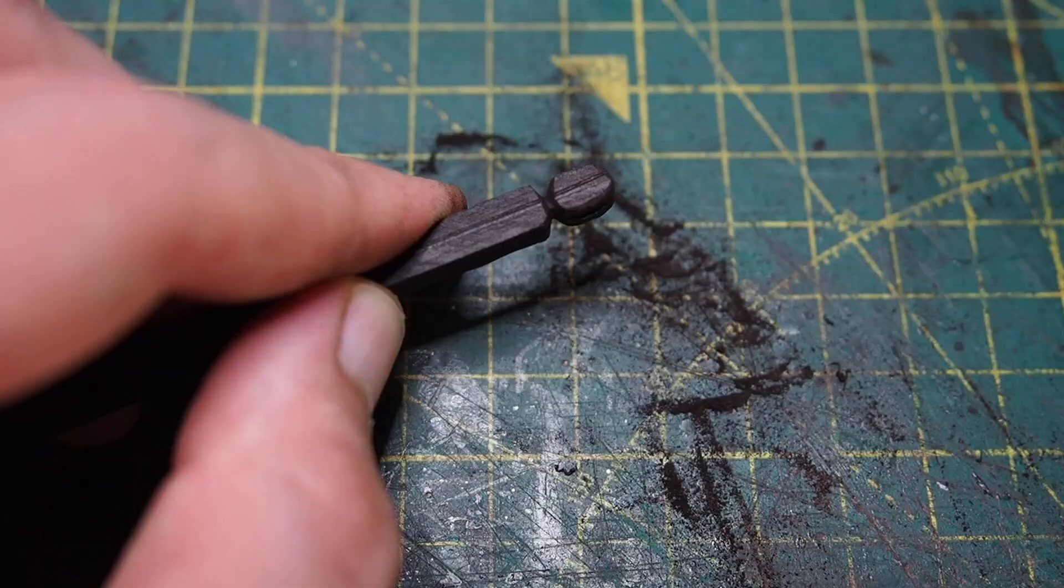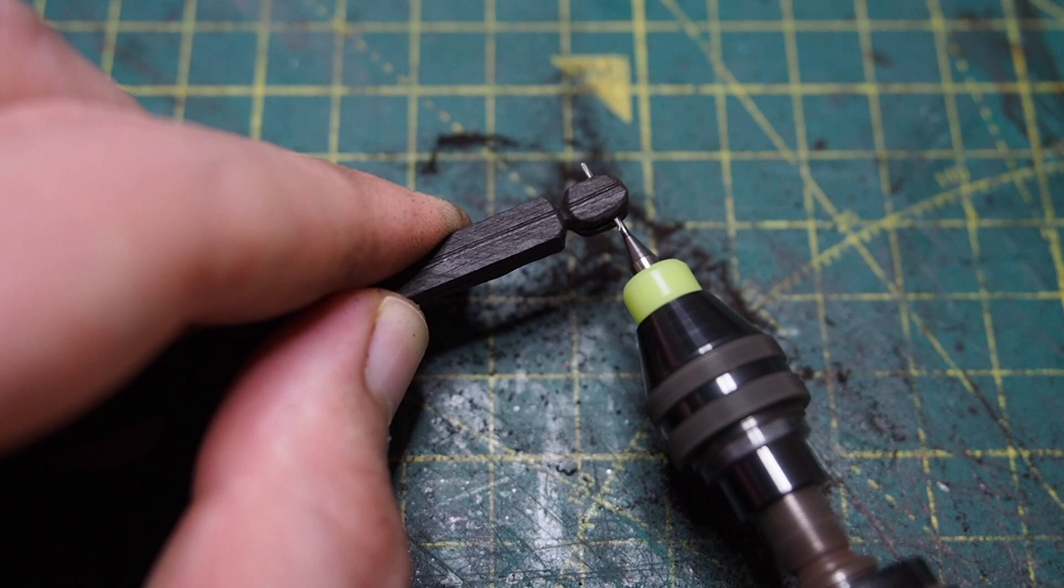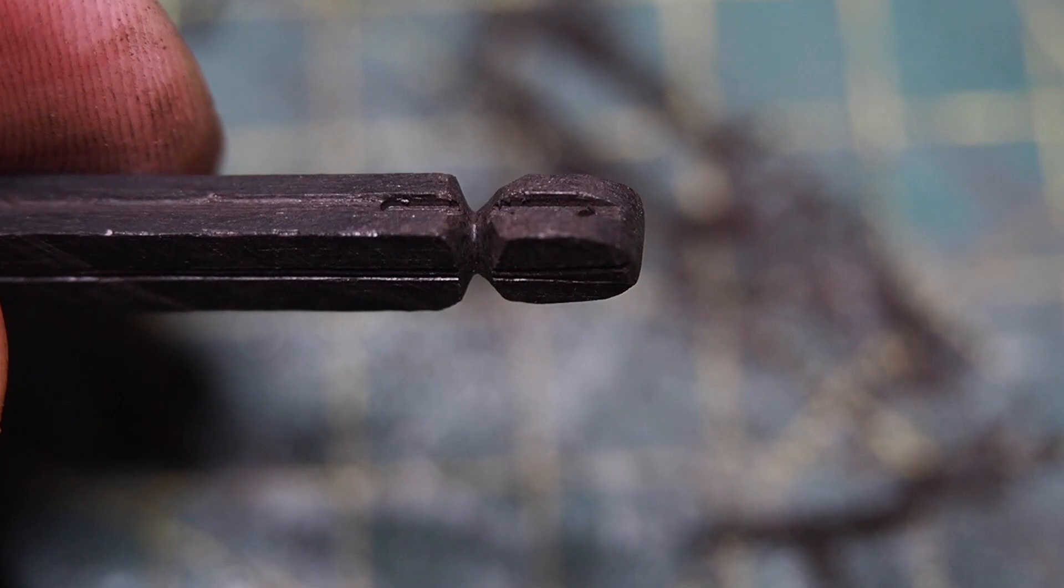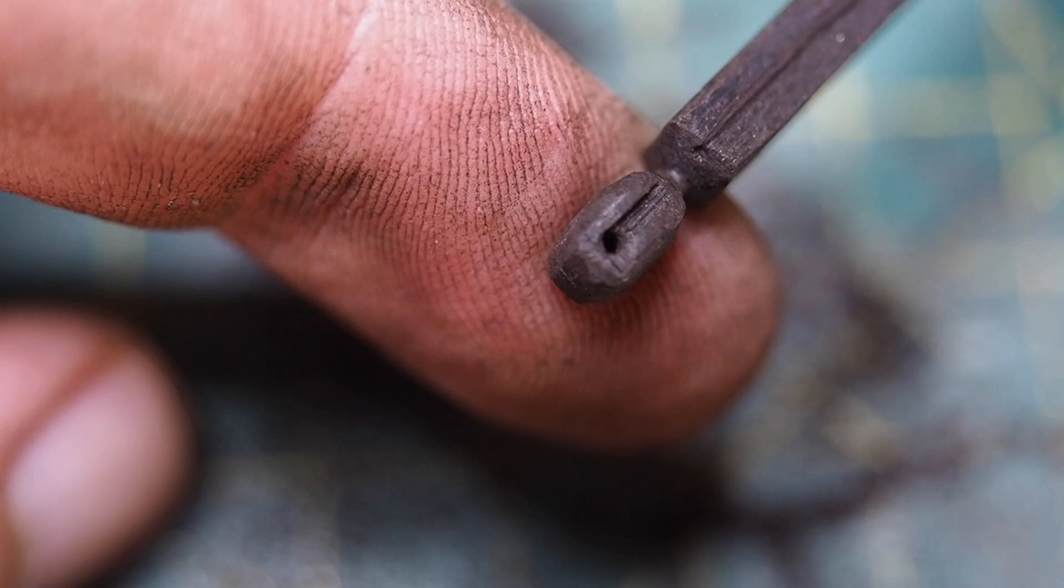I drilled the block during this step, but you may prefer to do this one or two steps earlier. It doesn't matter. In any case, the hole must be approximately at one-fifth of the total length of the block.